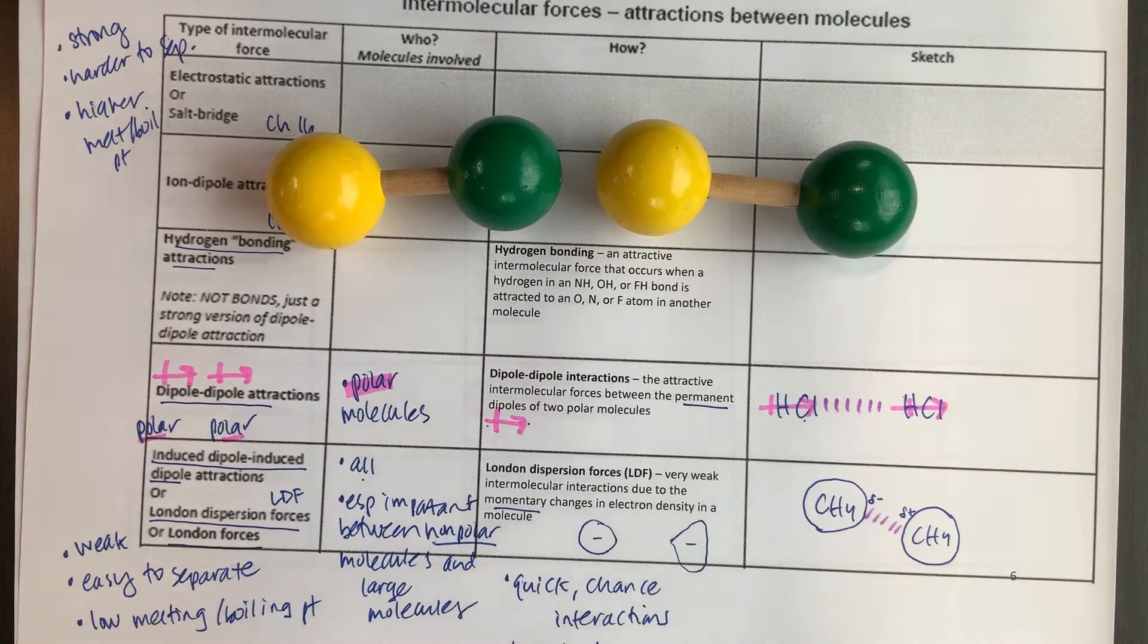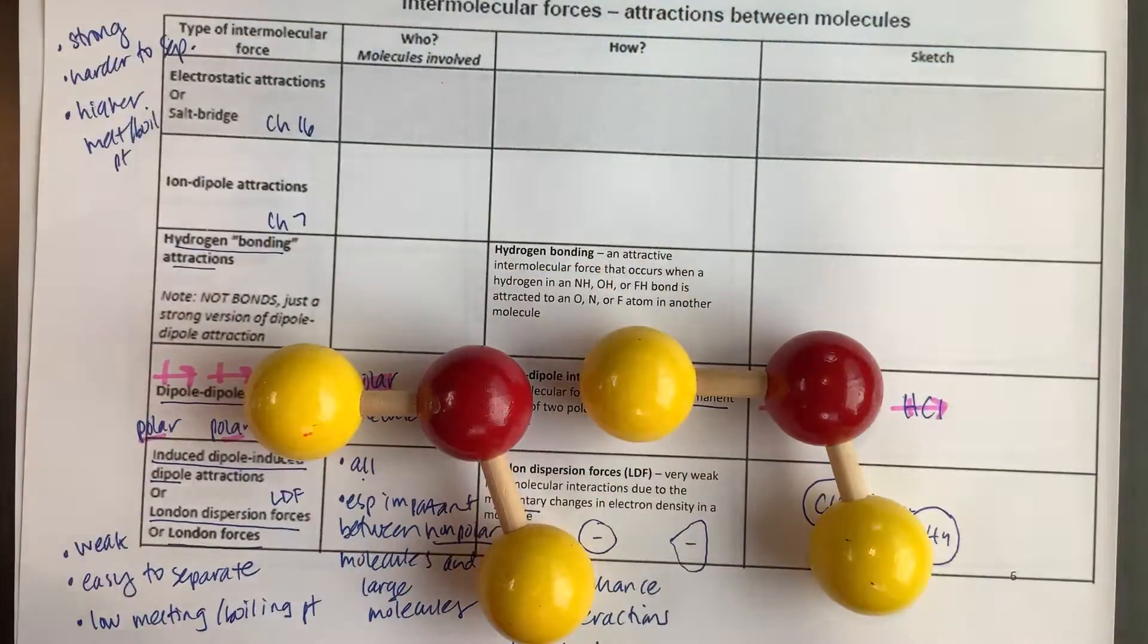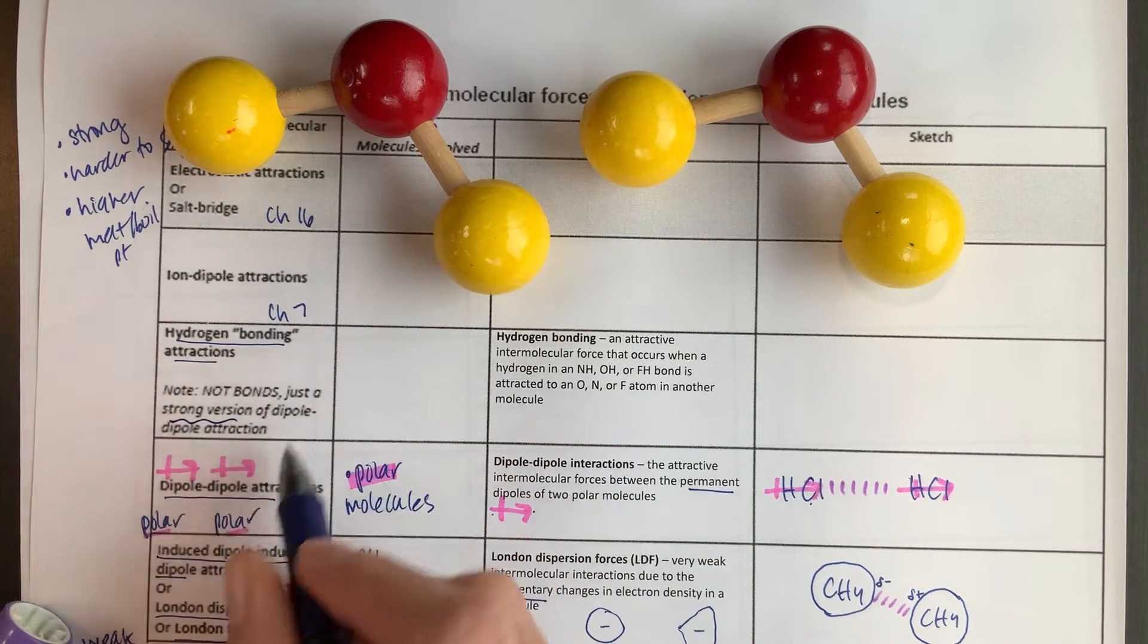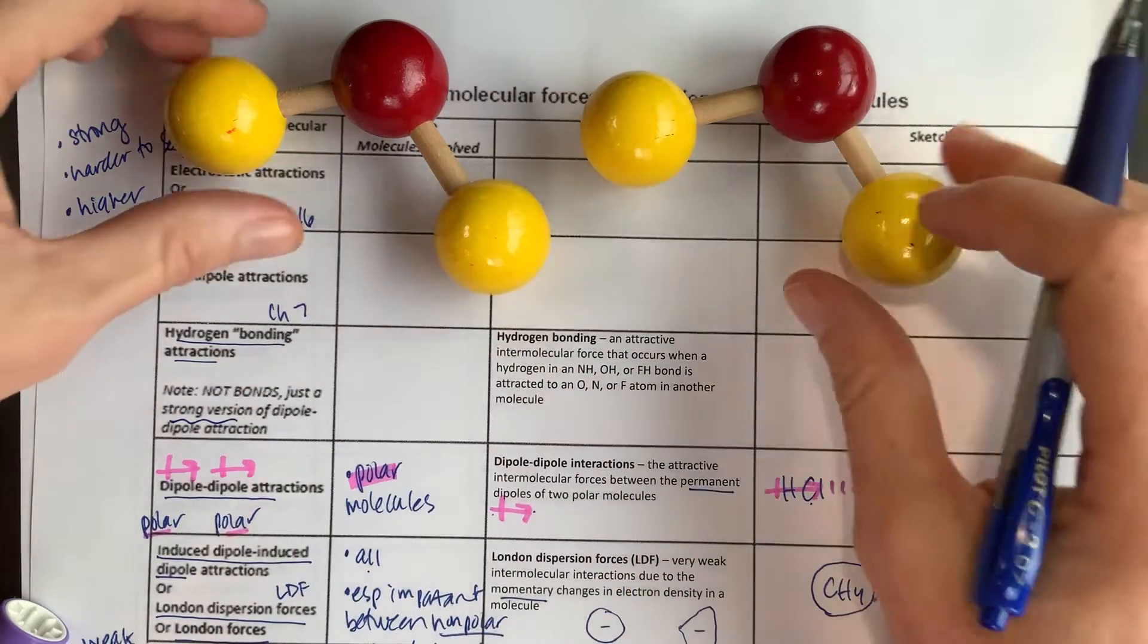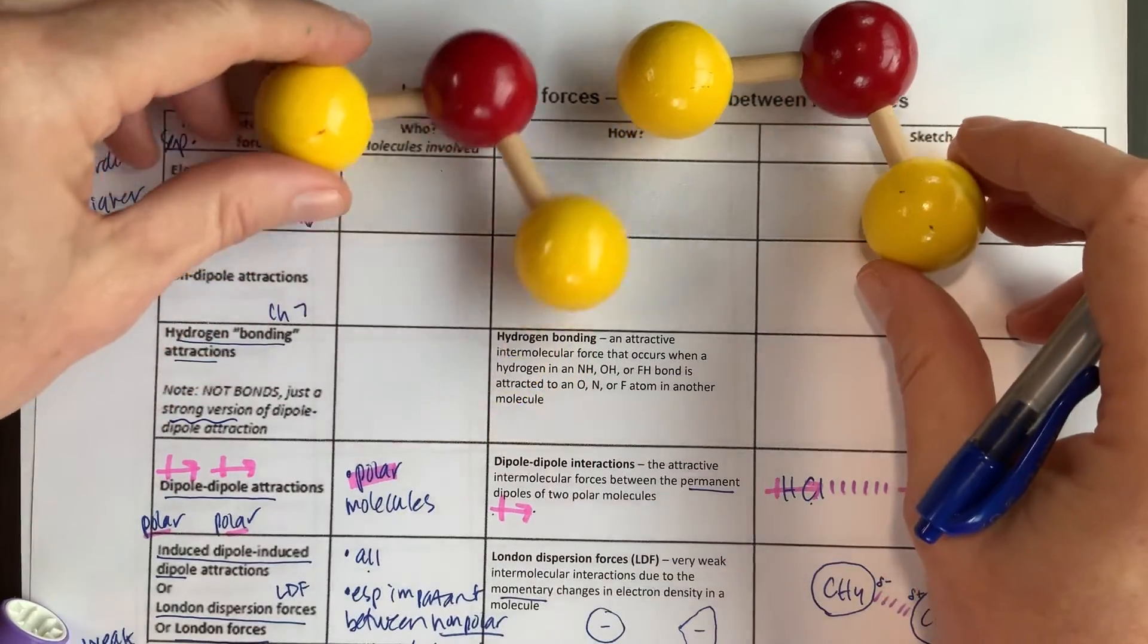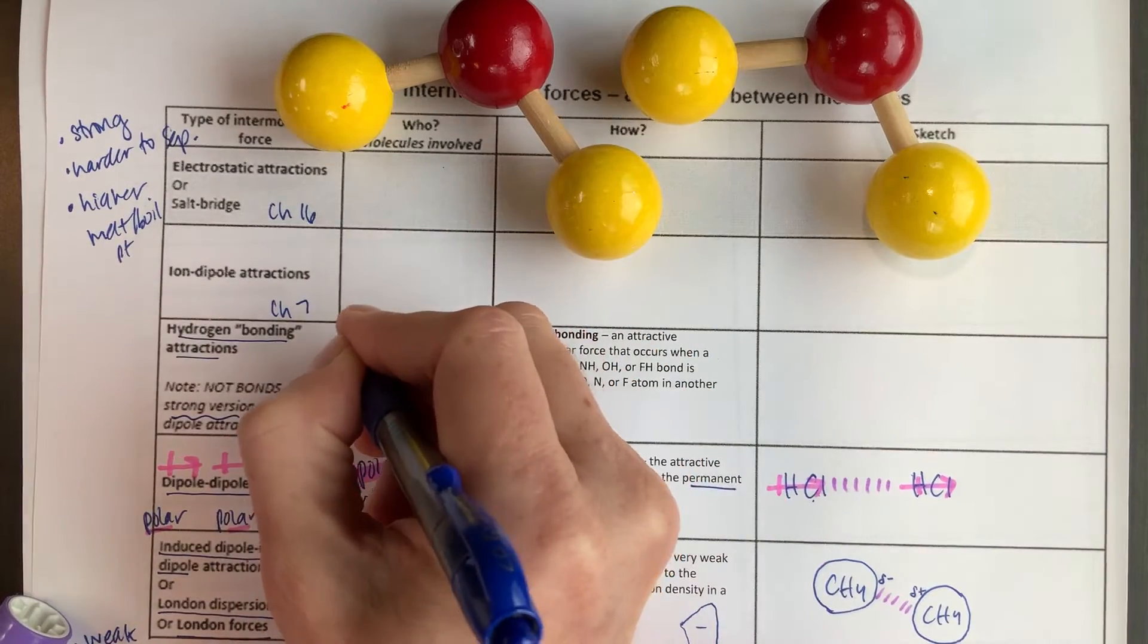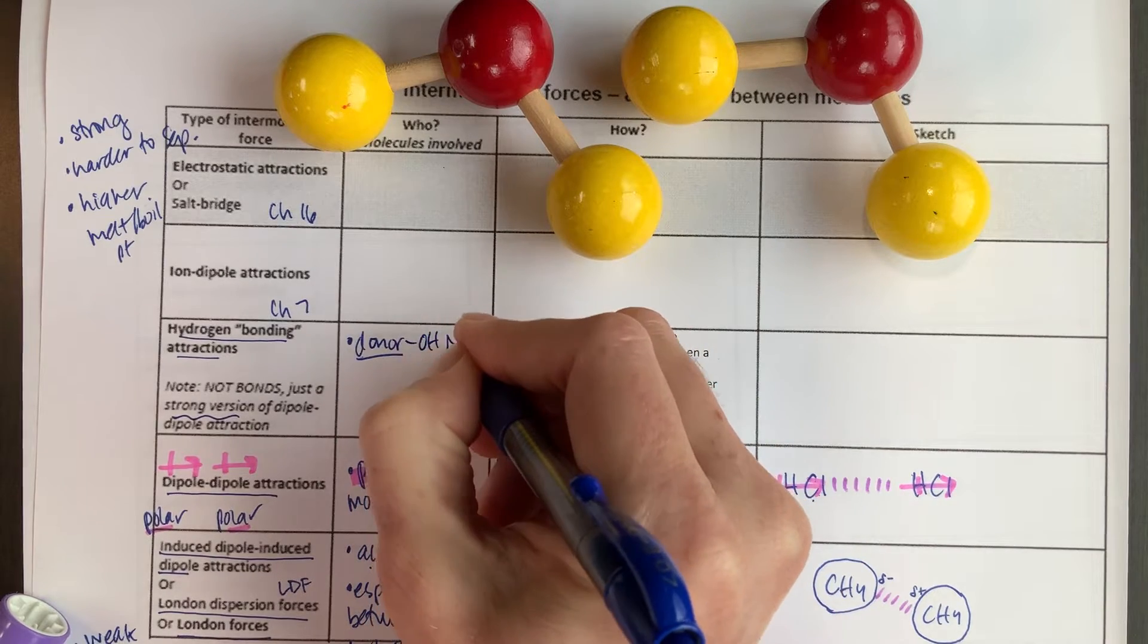Now, a special type of dipole-dipole attraction is what we see when we have water. So let's unpack what's going on with water a little bit here. So water is just a strong version of dipole-dipole attractions. It's not really bonding, because you can see that these two molecules are still separate entities. They are not bonded together. There's no stick connecting them together. So hydrogen bonding, we're going to see that we always need two types of molecules. We need a donor molecule.